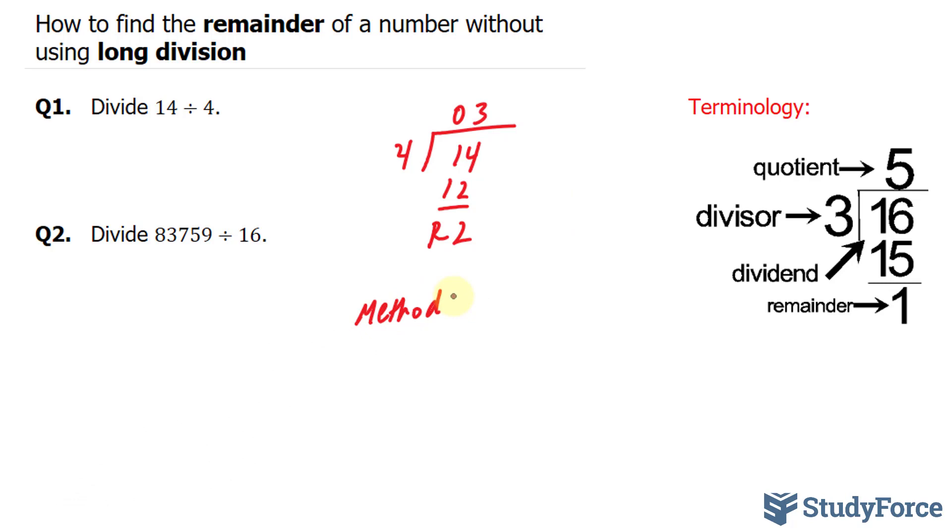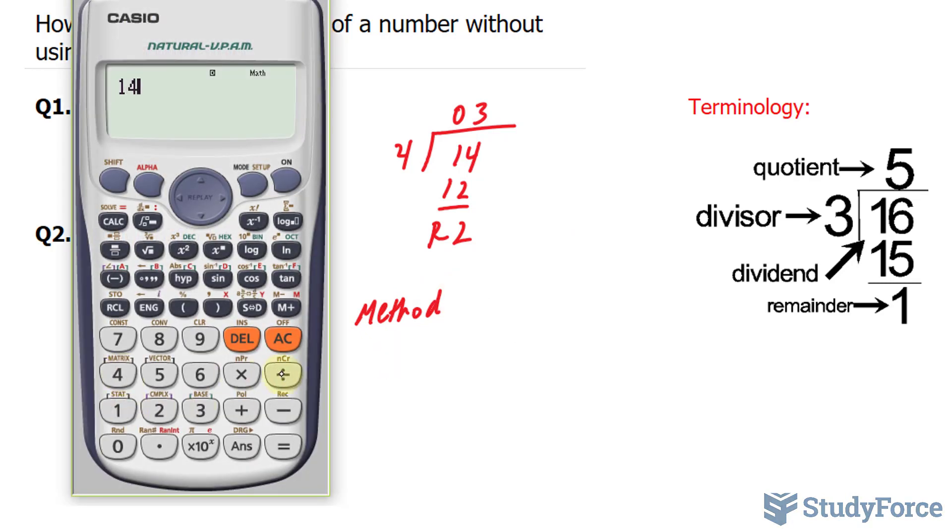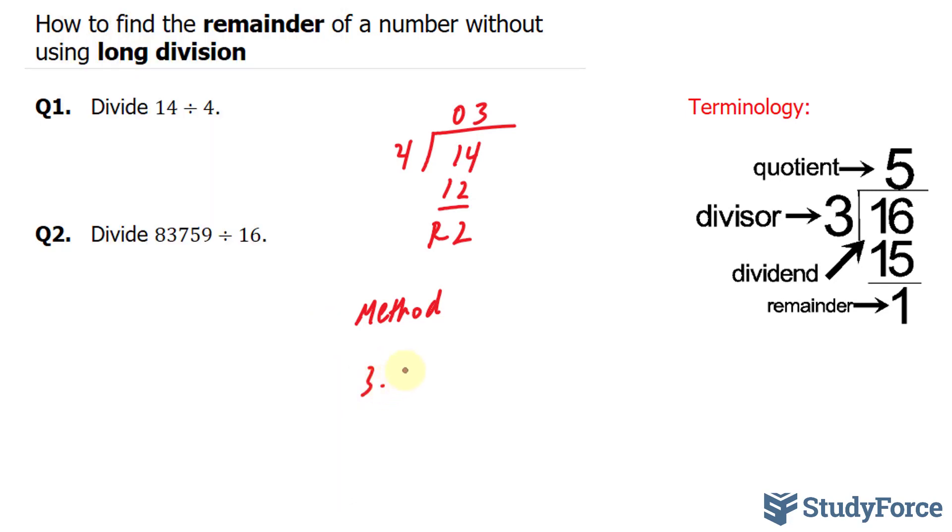In method 1, you start by dividing these two numbers using your calculator. We have 14 divided by 4, we end up with 3.5. You then take the integer part of this number, and in our case it's 3. 3 times the divisor, 4, that gives us 12.